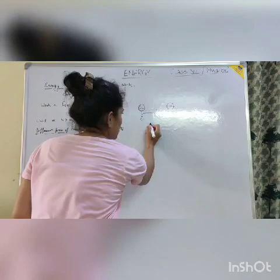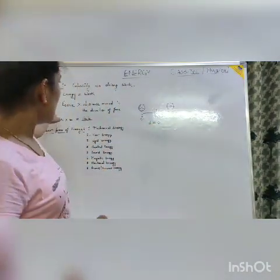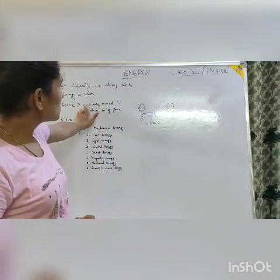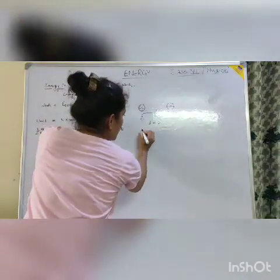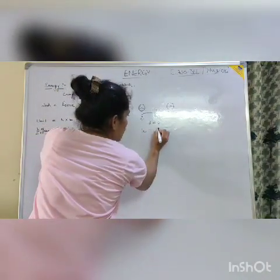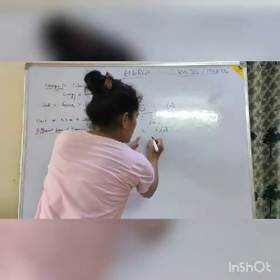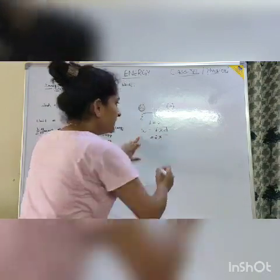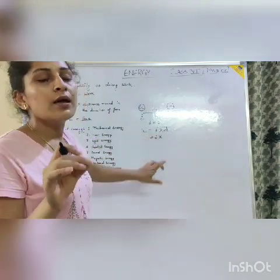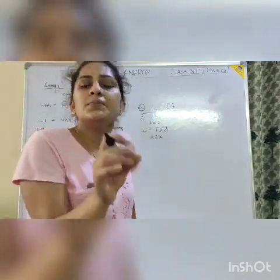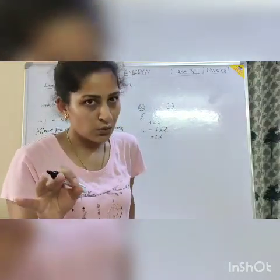In that situation the displacement will be zero. I have written the formula: Work equals force multiplied by distance moved in the direction. And mathematically, Work equals force multiplied by distance. All of you know that if one term in a multiplication is zero, then you will get zero.